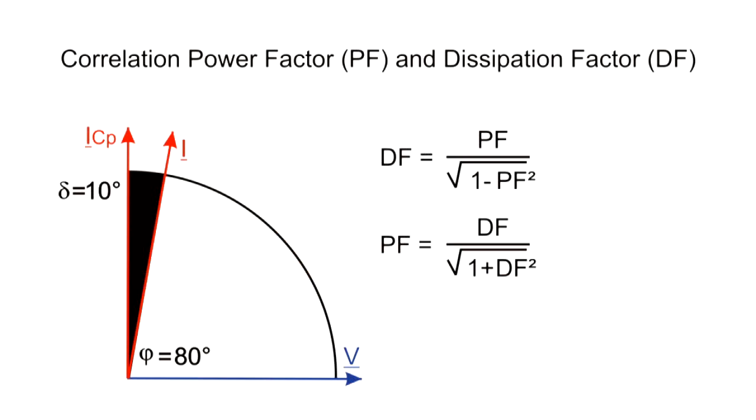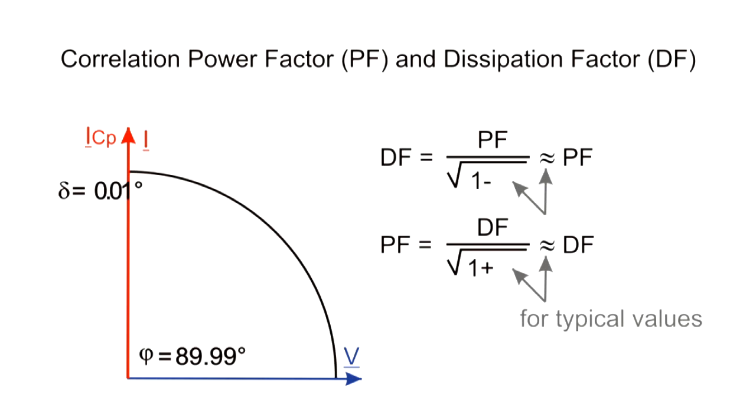The mathematical correlation between the power factor and the dissipation factor is thus expressed. Since typical values are very small, the difference between the dissipation factor tangent delta and the power factor cosine phi can be neglected, which is why we will alternately refer to power factor or dissipation factor in this video and use only one diagram to show both factors.